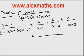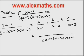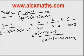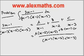If I take LCM, the LCM part is x minus 1 into x minus 2 into x minus 3. And the numerator will have A into x minus 2 into x minus 3, plus B into x minus 1 into x minus 3, plus C into x minus 1 into x minus 2.